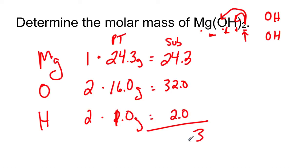Then you add them all up. 24.3 plus 32 plus 2 equals 58.3, and that's how many grams are in one mole of magnesium hydroxide.